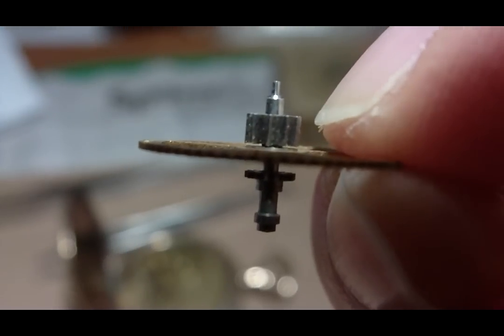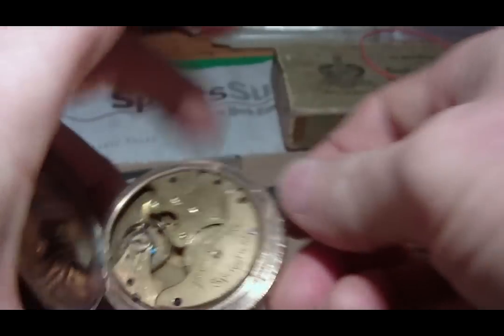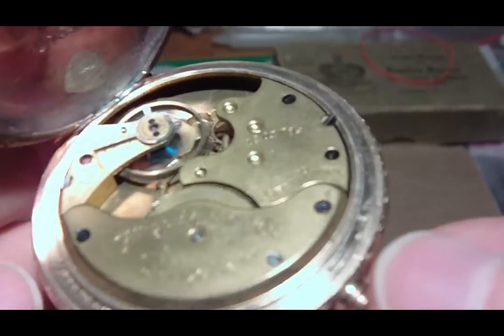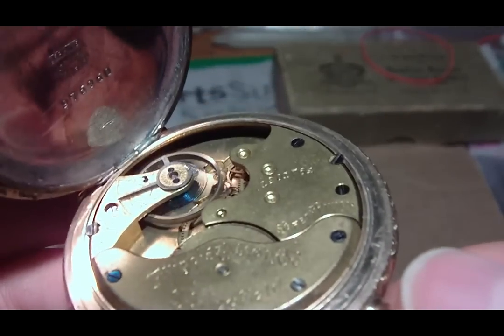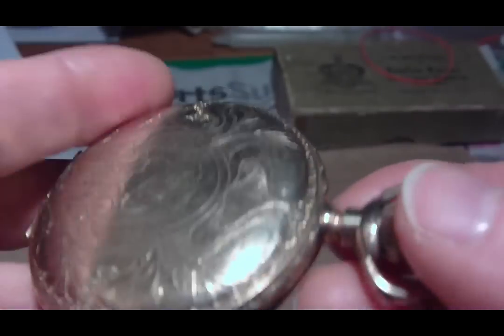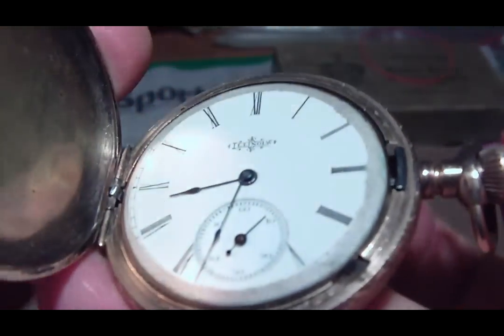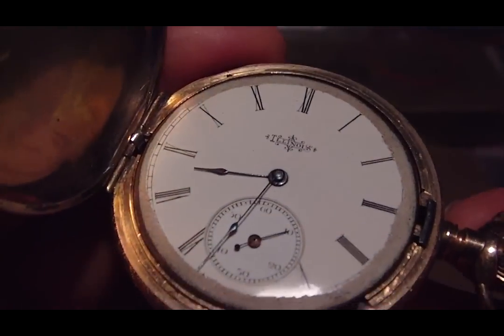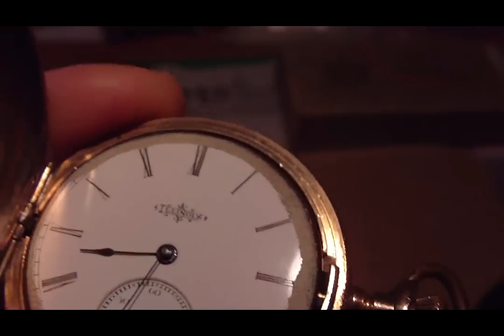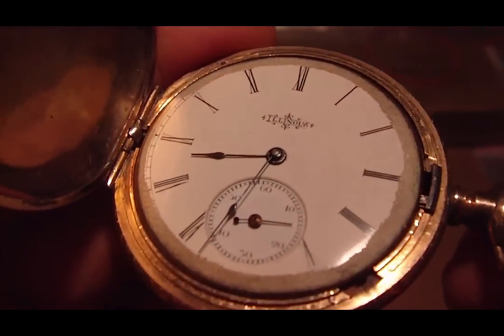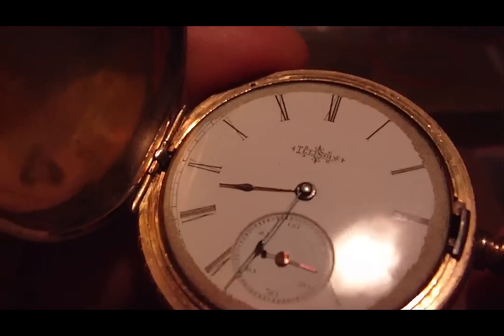By the way, this pocket watch, this is the seven jewel Illinois size 14 hunter case. I got it real cheap because you can see there's no crystal, no bezel, someone ground around the dial.